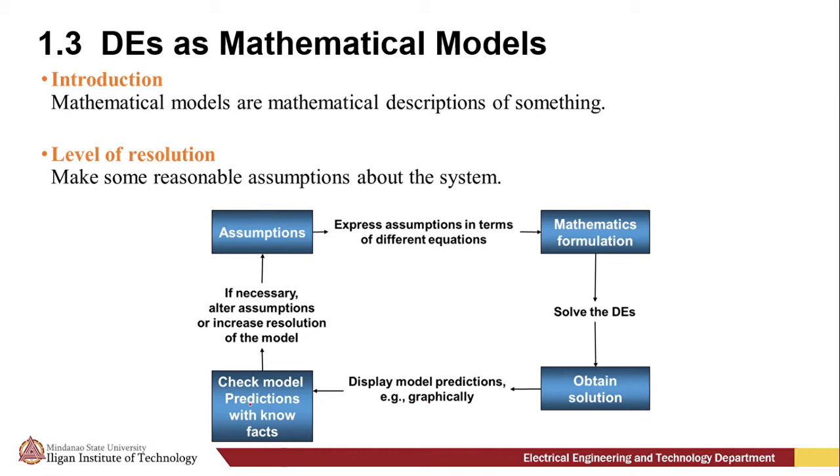Then we check the model predictions with the known facts. If it is necessary, we can alter the assumptions or increase the resolution of the model. And the cycle goes on until we achieve our best mathematical model for that specific system.